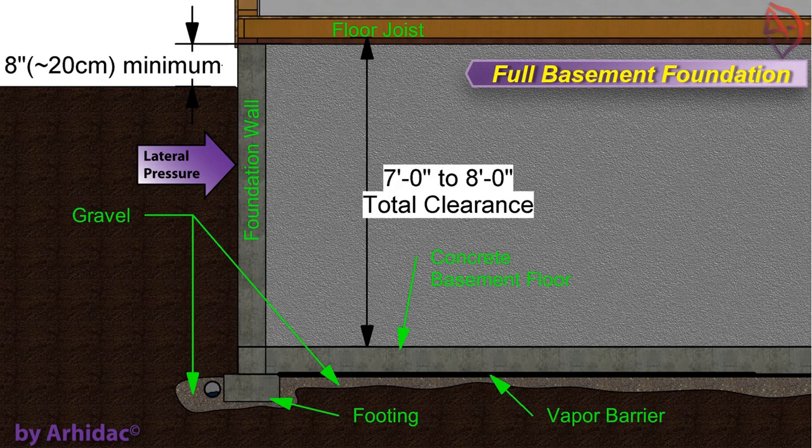In a full basement foundation, the foundation wall also serves as the basement wall. It is recommended that the top of the foundation wall be extended at least 8 inches above the finish grade. Foundation walls are usually 7 feet to 8 feet from the floor slab to the bottom of the joists. The walls must withstand lateral pressure of the soil and must be fully waterproof.